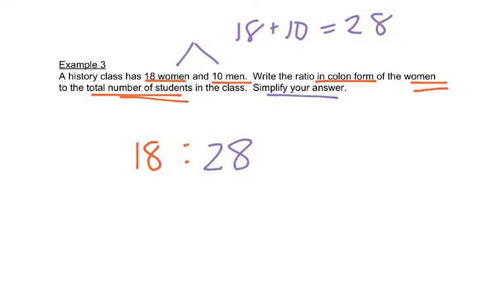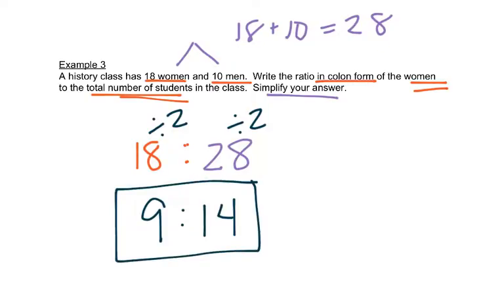This time it says simplify our answer. So it was a little bit like reducing a fraction. We want to divide by the biggest number we can think of that goes into both of them. So we'll divide both of those by 2. 28 divided by 2 is 14. Now there's nothing that goes into both 9 and 14, so this is in simplest form.